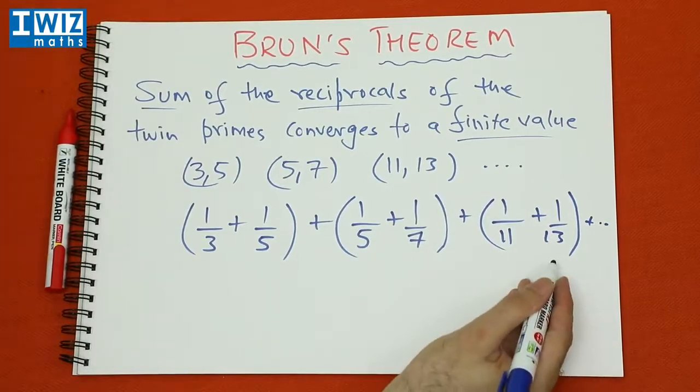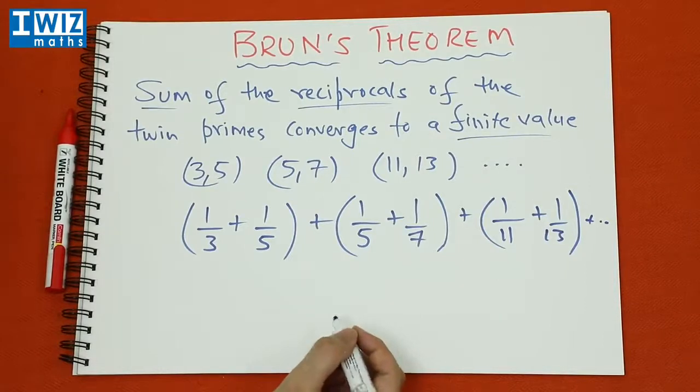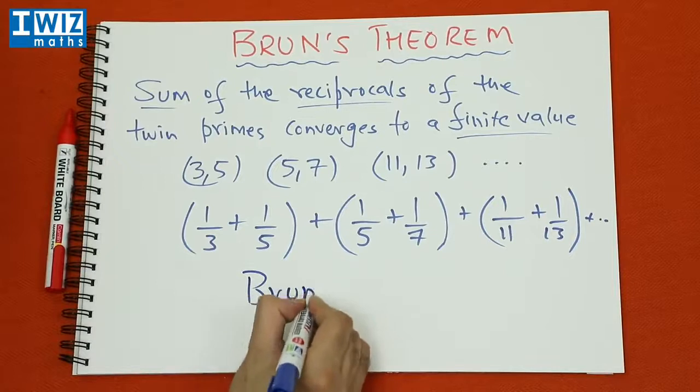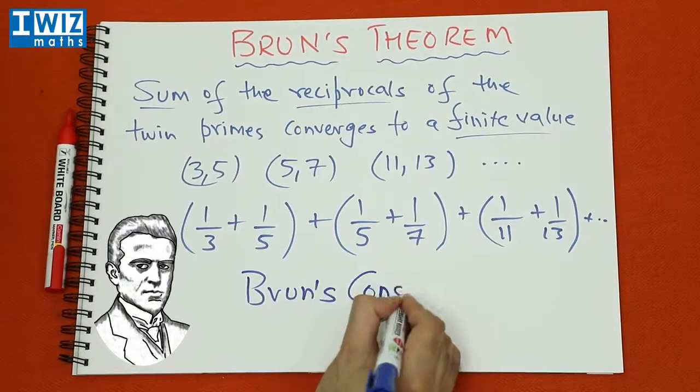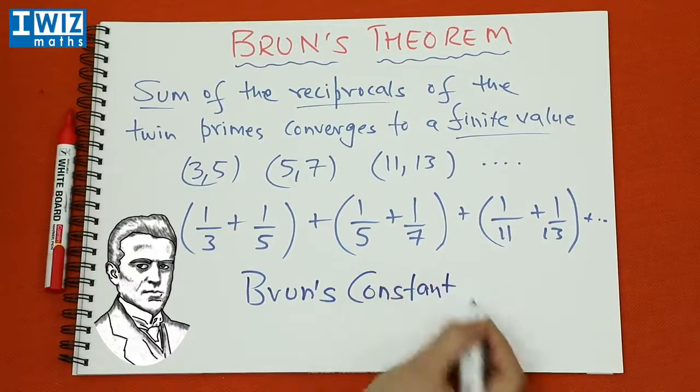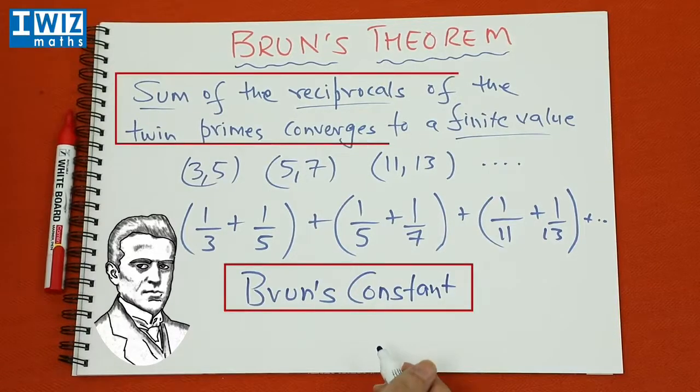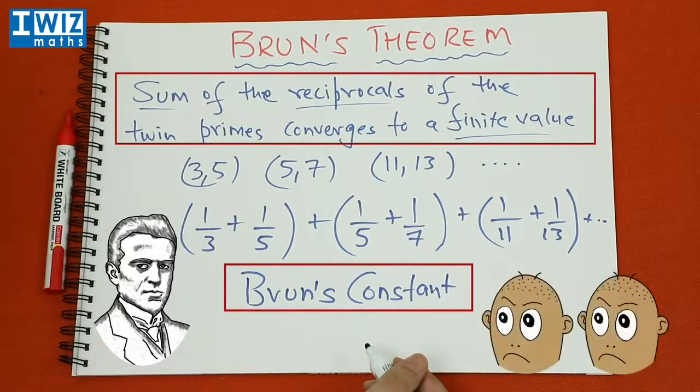Then this converges to a finite value and the finite value is now known as Brun's constant. It's actually named after the gentleman himself. So that's a really fascinating property of twin primes where the sum of the reciprocals of the twin primes converges to a finite value and that value is now known as Brun's constant.